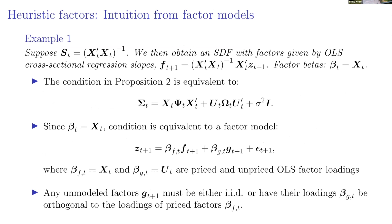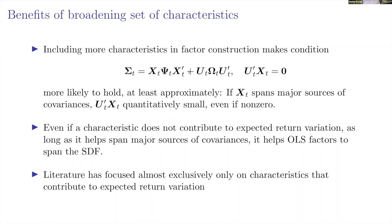When is this condition more likely to be satisfied? We want the second piece — the component orthogonal to X — to be small. If we include a lot of characteristics, the first piece becomes more dominant. This gives us an intuition: working with factor models that include many characteristics will likely make them more efficient, because this condition is more likely to be satisfied quantitatively.